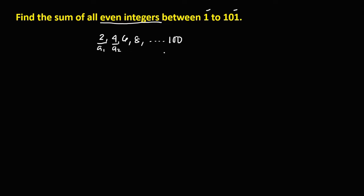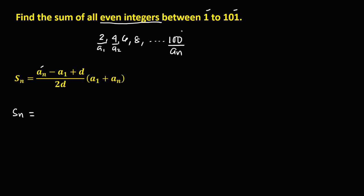From this given sequence, the first term is a sub 1, the second term is a sub 2, and the last term is a sub n. Using the sum formula, S sub n equals a sub n — the last term, which is 100 — minus a sub 1, the first term, which is 2, plus the common difference.